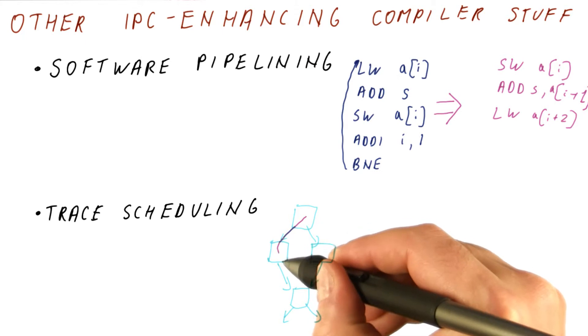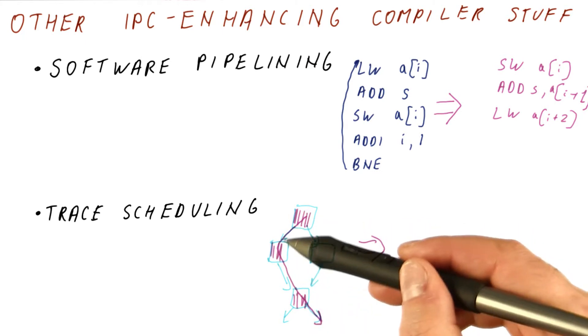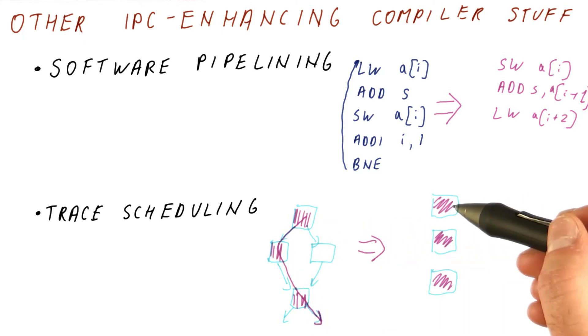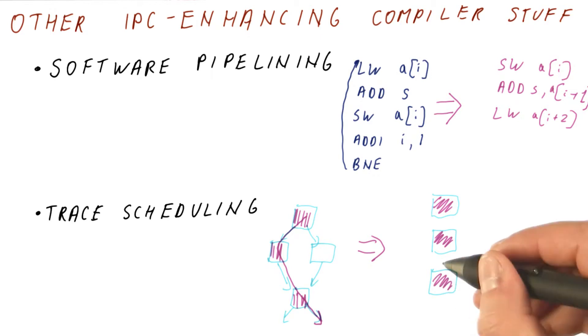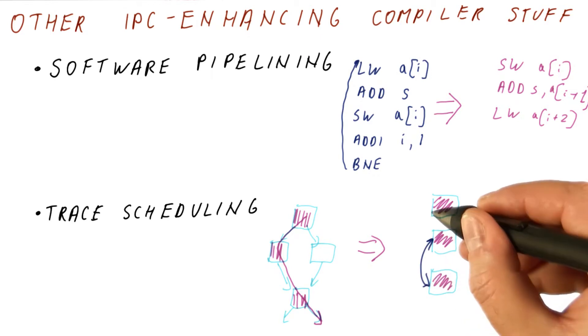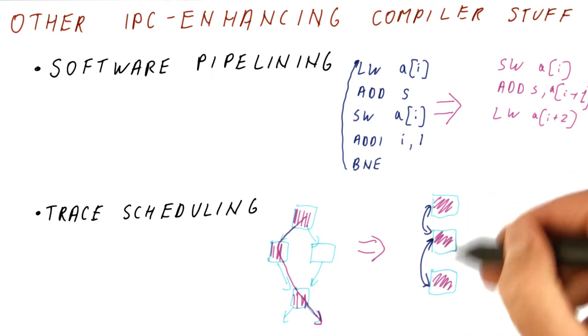We find what the common path through this code is, and the blocks that are on the common path are then put together like this, without the branches in between. Now we can freely schedule instructions in between these.